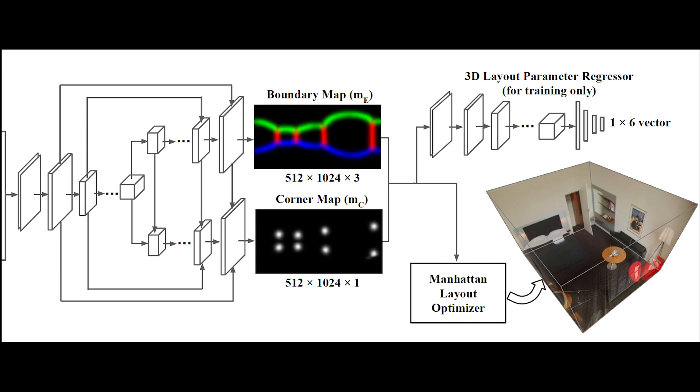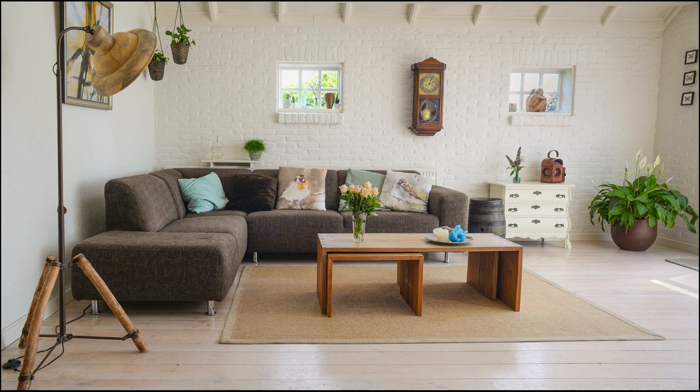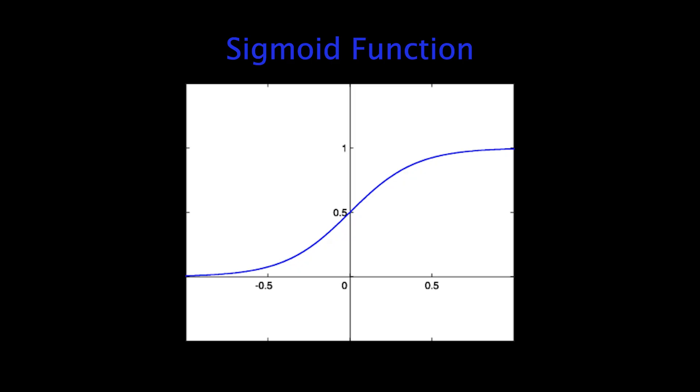Similar to U-Net, it first down samples and then upsamples the feature maps with lateral connections in between. In the upsampling part of the corner regressor, aside from the two feature maps from the bottom and lateral connections, there are additional features from the boundary regressor. The paper states that the idea comes from the heuristics that boundary intersections imply a corner position, which may be especially useful when the corners are not visible. The final activation function of these two regressors is a sigmoid function, meaning that each pixel takes values ranging from 0 to 1, representing the predicted probability of the pixel being a corner or a boundary.